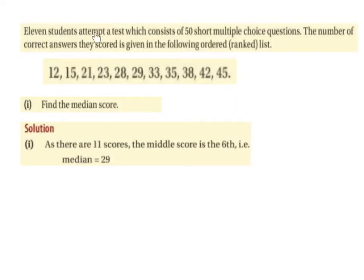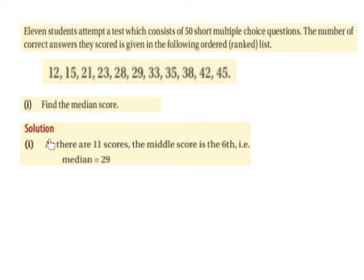11 students attempt a test consisting of 50 short multiple choice questions. The number of correct answers scored is given in the following ordered ranked list: 12, 15, 21, 23, 28, 29, 33, 35, 38, 42, and 45. So 12 is the lowest score and 45 is the highest. Find the median score. As there are 11 scores, the middle score is the 6th, i.e., the median is 29.